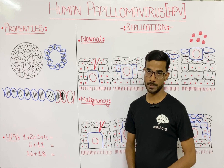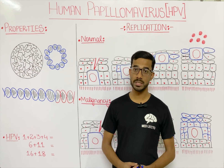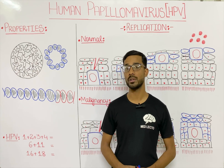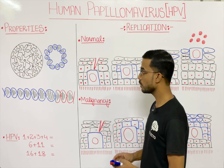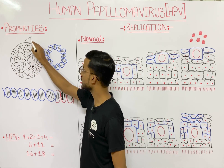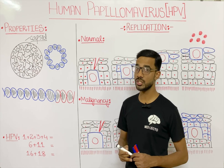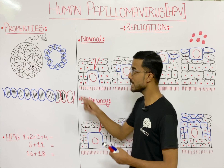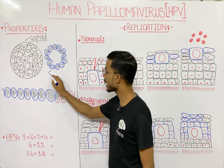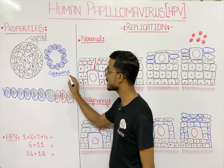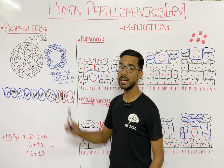Every virus has two most important components: first is the capsid, which is made up of protein, and second is the genome. Similarly, HPV also has these two components. The HPV capsid is icosahedral in shape, meaning it is 20-sided. Inside the capsid you will see the presence of the genome. The HPV genome is actually a double-stranded circular DNA molecule present inside the capsid.